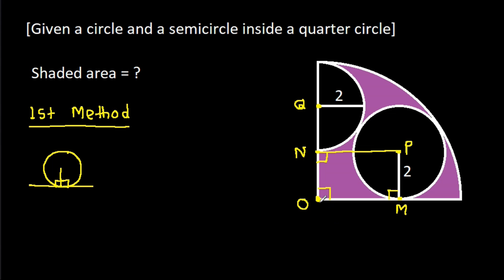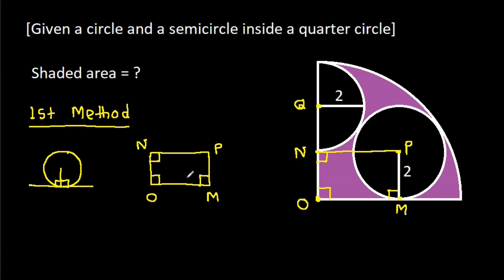In quadrilateral O, M, P, N, these three angles are 90 degrees, so this angle will also be 90 degrees. That means O, M, P, N will be a rectangle.